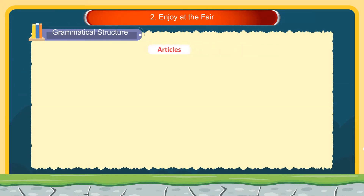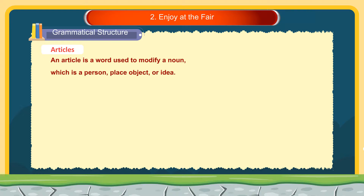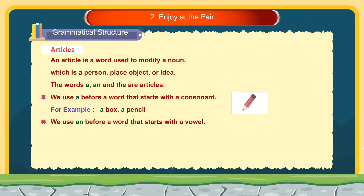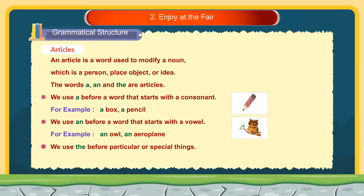Grammatical structure — Articles. An article is a word used to modify a noun, which is a person, place, object, or idea. The words a, an, and the are articles. We use 'a' before a word that starts with a consonant — for example, a box, a pencil. We use 'an' before a word that starts with a vowel — for example, an owl, an aeroplane. We use 'the' before particular or special things — for example, the Taj Mahal, the sun.